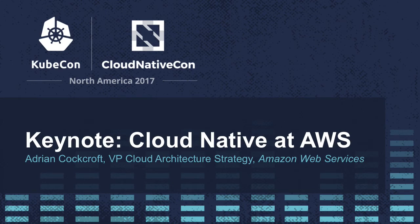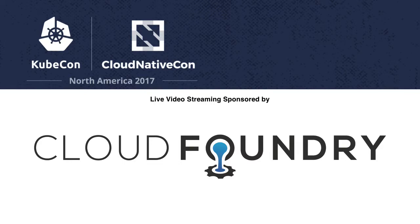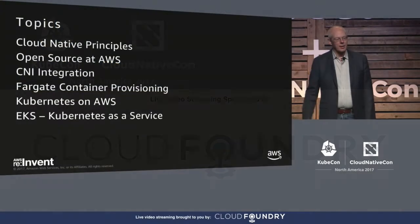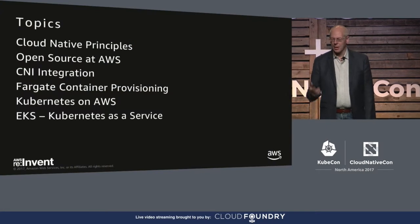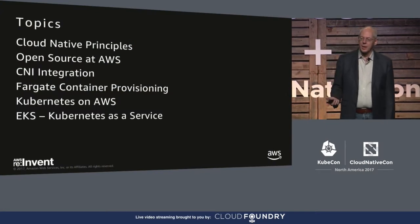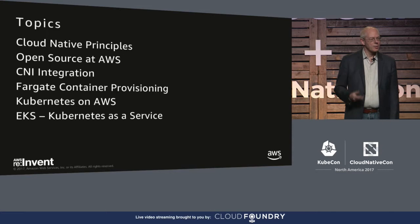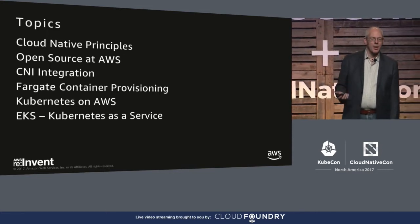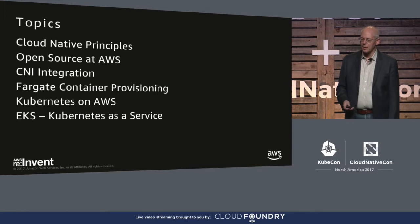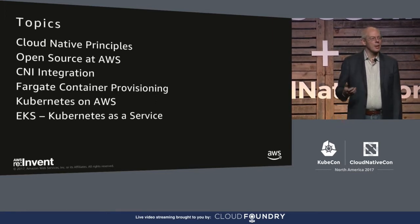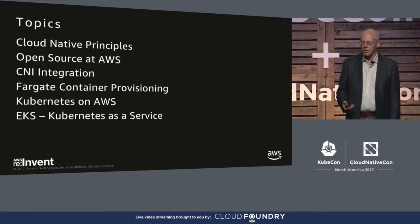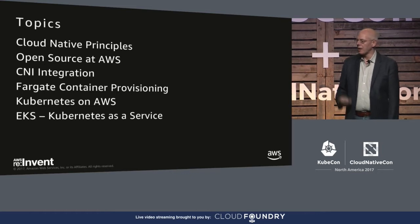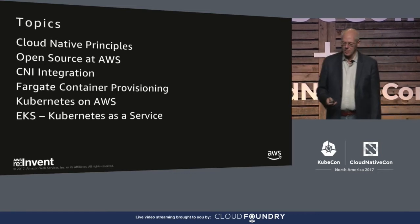Originally I said I was talking about cloud native at AWS and I've got a few new things we announced last week that I want to talk about. A little bit about cloud native principles, then open source at AWS, then I'll dive into a few things we've been doing on CNI, the new Fargate thing for container provisioning, what we're doing to help Kubernetes run on AWS, and then EKS — Kubernetes as a service.